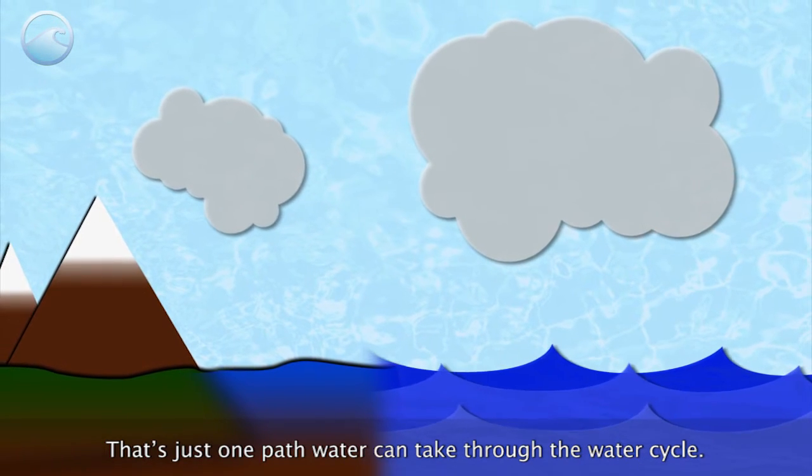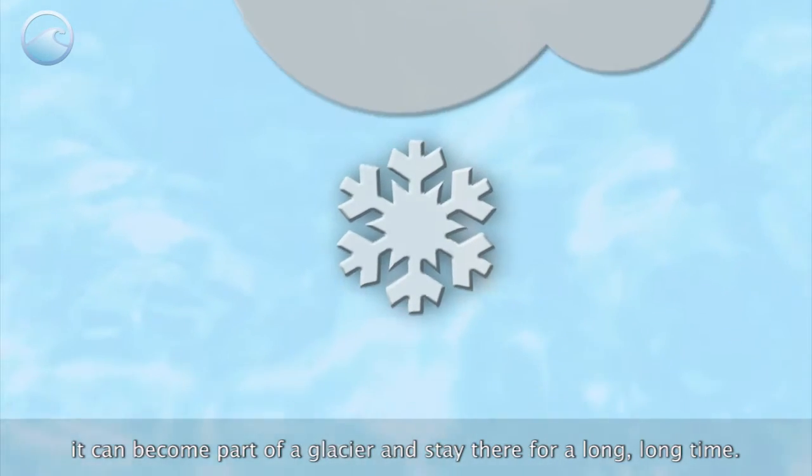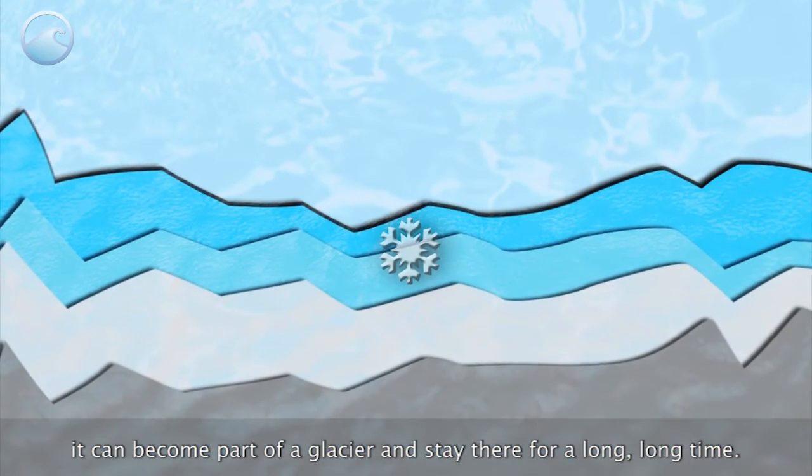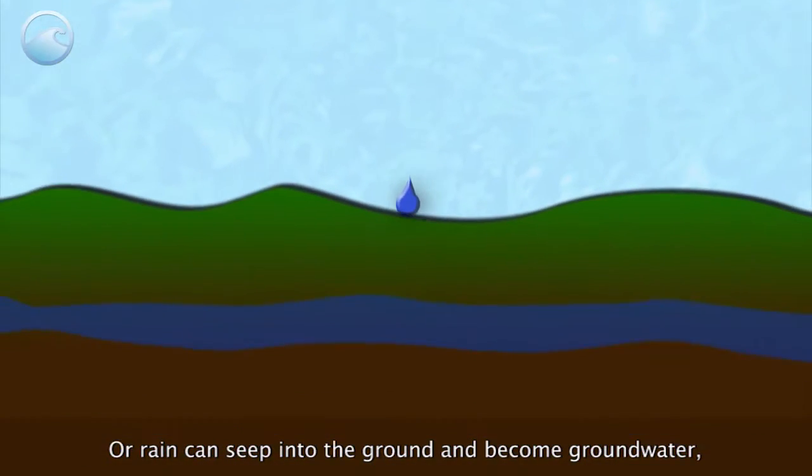Instead of snow melting and running off into a river, it can become part of a glacier and stay there for a long, long time. Or rain can seep into the ground and become groundwater.